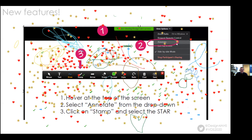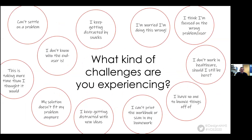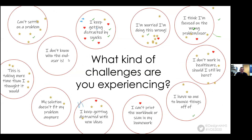Alright, now that everybody's had a chance to try that, we're going to clear the screen and move on to the next slide. On this slide we want to know what kinds of challenges you're experiencing as you go through this process. We've got some common problems we see over and over. Drop your stamp to identify with anything that makes sense to you — we're going to try to create a heat map.